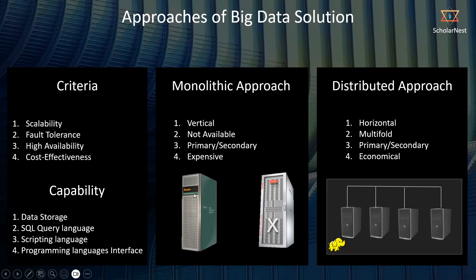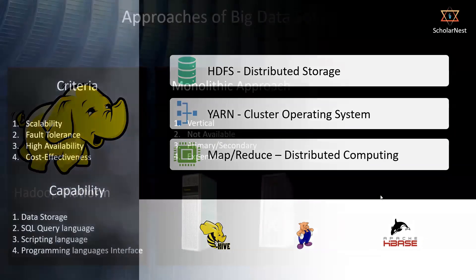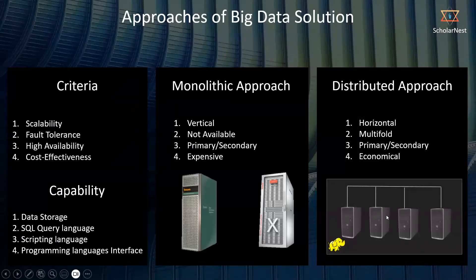We needed a software or technology which allows all these small machines to join together into a group, and have the entire group work like a single large system. For that, they had this component called YARN — a cluster operating system, or cluster resource manager — which allows a group of systems to work like a single large system.